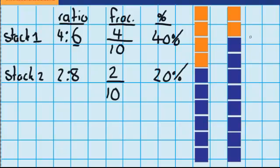Now what I want to do is join these two stacks together. Before I do, have a look at these two percentages — in stack one 40% was orange, and in stack two 20% was orange. Have a think: if I combine these, what do you think the percentage of orange will be?